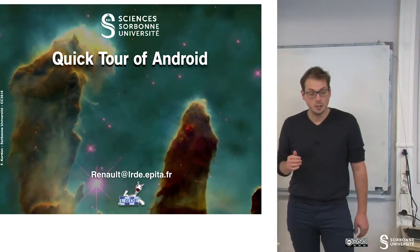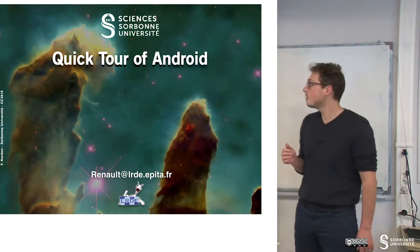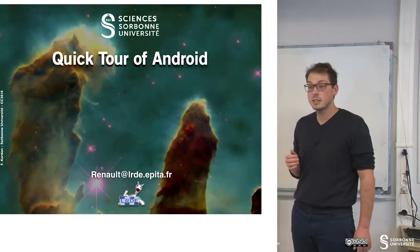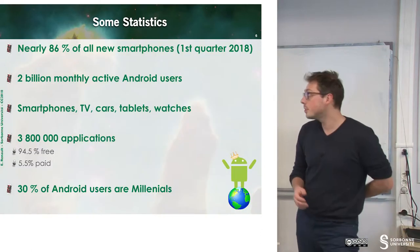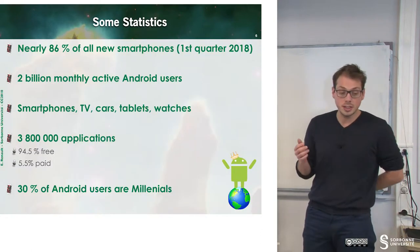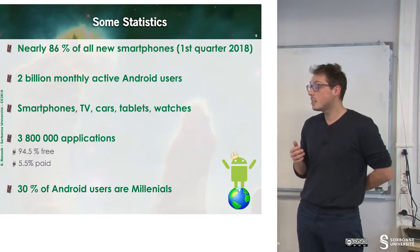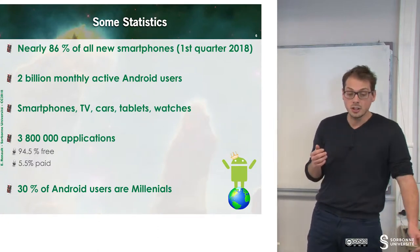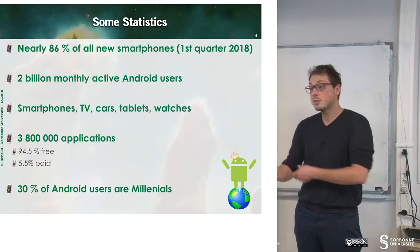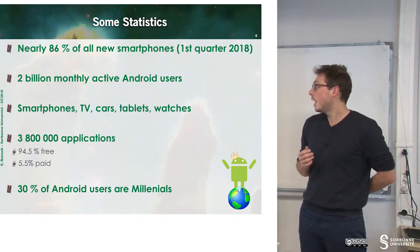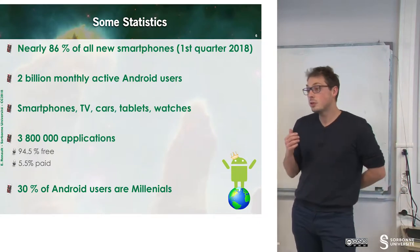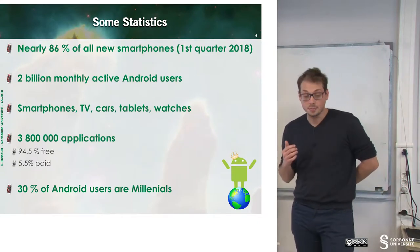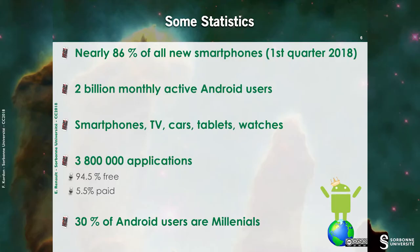Hi everybody. We first have a quick tour of Android in this chapter. Why should we learn Android? Android covers almost 86% of OS in smartphones in 2018, and there are almost 2 billion monthly active Android users. This means that there are a lot of users that use Android.